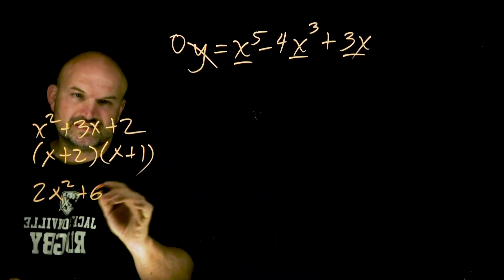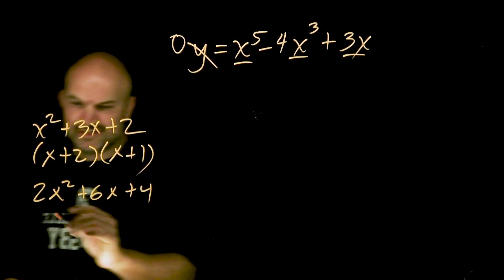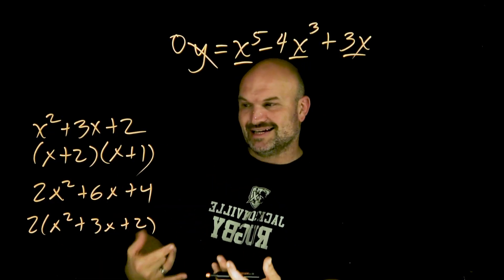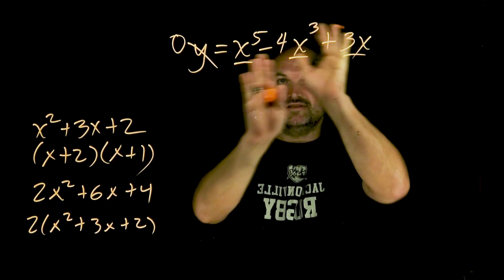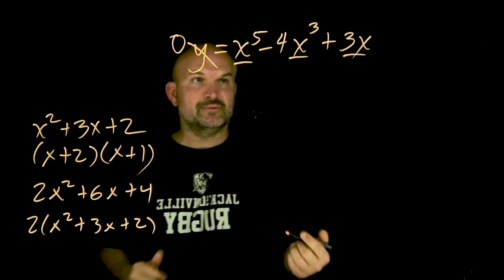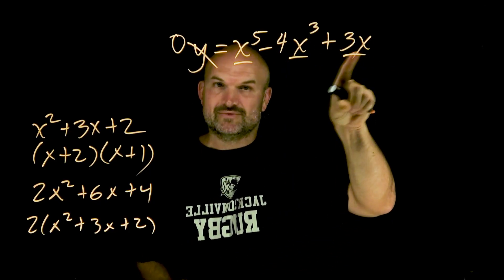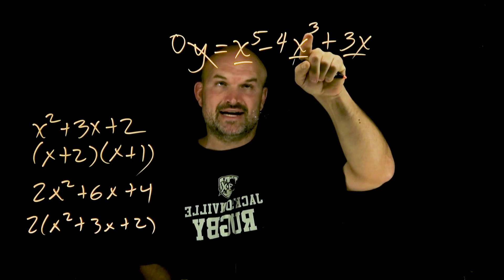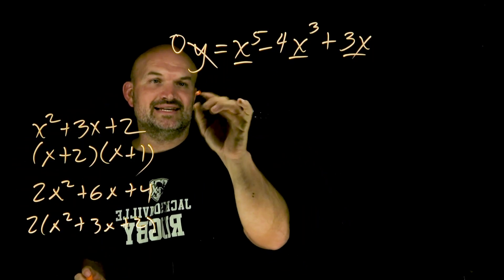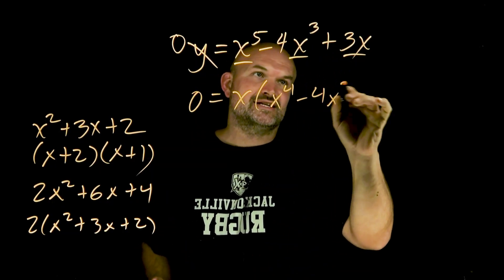For example, if I had 2x² + 6x + 4, the first thing our teacher would say is factor out the common term. Notice that 2, 6, and 4 are all divisible by 2. If your terms are divisible by the same number or variable, you can factor that term out. So if I look at x⁵ - 4x³ + 3x, none of the numbers share a common factor, but my variables — I can divide out a common term. The largest power I can divide into all terms is x, so I divide it out and rewrite as x times (x⁴ - 4x² + 3).